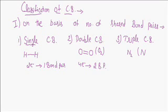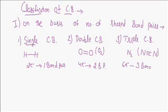If two atoms are combined by three covalent bonds, this is termed a triple covalent bond. Three bonds require sharing of six electrons, or three bond pairs. In summary: one bond pair shared = single covalent bond; two bond pairs = double; three bond pairs = triple covalent bond.